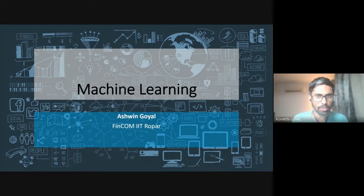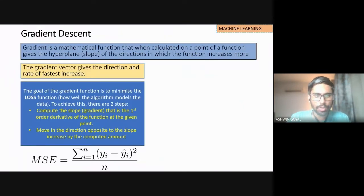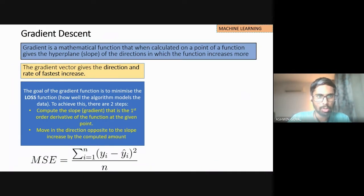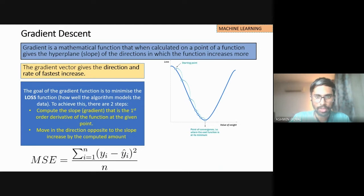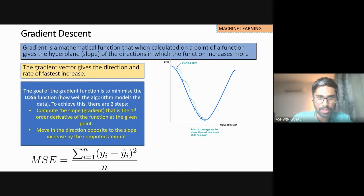Let's start with the first one, which is gradient descent. When we talk about gradient descent, it is essentially a mathematical function. It helps you reach the local minima — meaning it helps us reach the lowest point, or the least cost, in the fastest time.